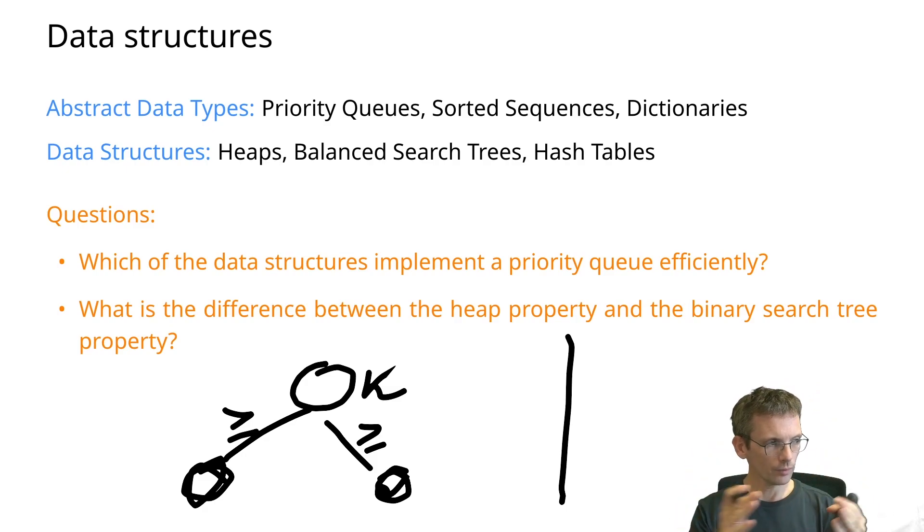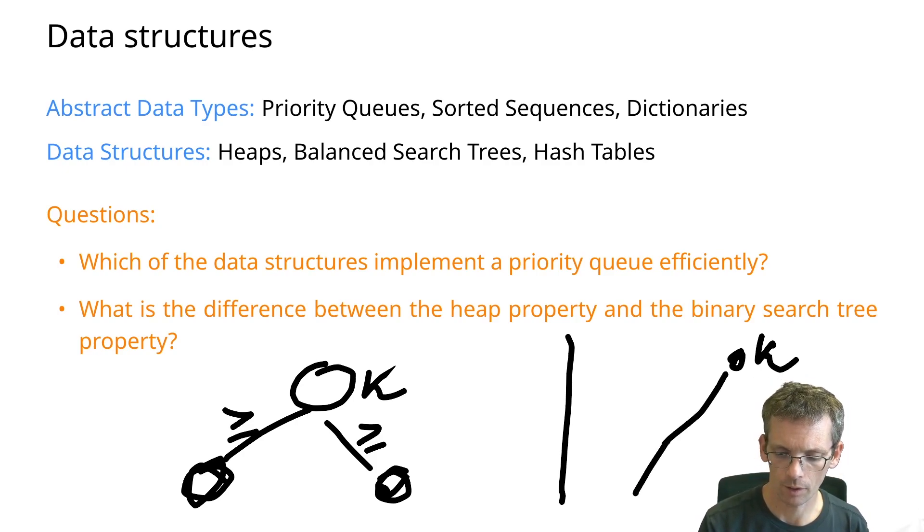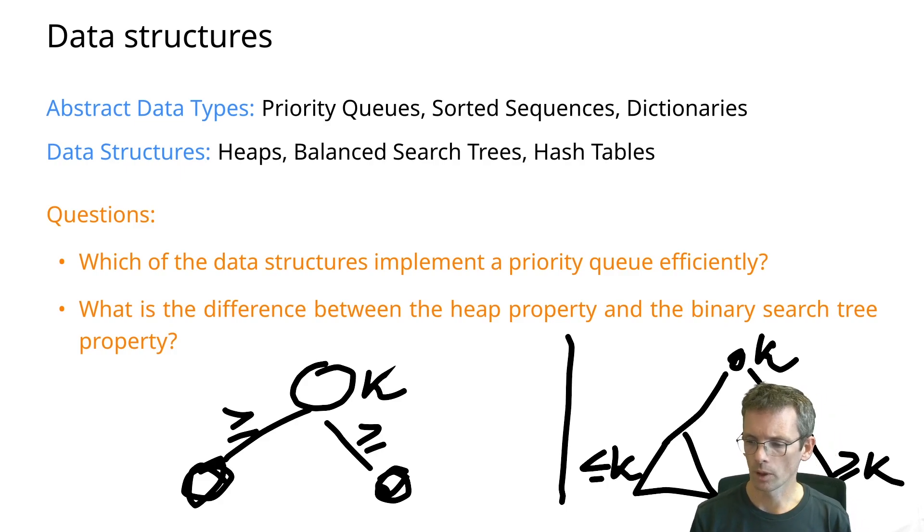The binary search tree property. First of all, the ordering is not top down, but left to right, depending on how you see it. And I'm not making just a statement about the children, but about the subtree. So if I have the key k at a node, then in the left subtree, everything should be smaller or equal k, and in the right subtree, everything should be larger or equal k.